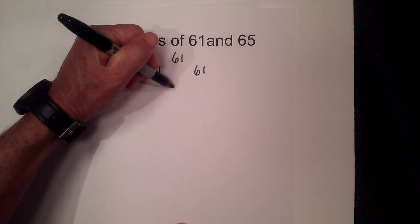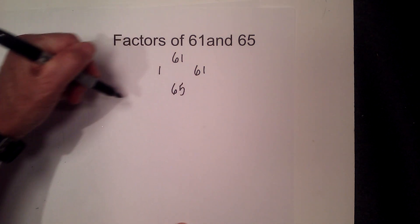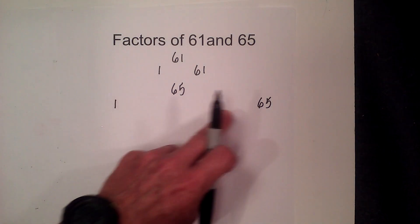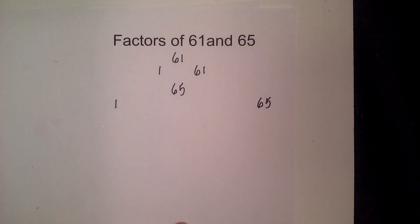Now for 65, the way I like to find all the factors is start with 1 times 65 and then find the numbers in between that multiply together to equal 65.